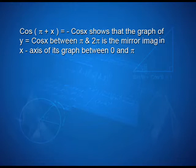To draw the graph of y = cos x in the interval pi by 2 to pi, we use the relation cos(pi − x) = −cos x. This shows that the values of cos x between pi by 2 and pi are negative, so the graph is below the x-axis in that region. The relation cos(pi + x) = −cos x shows that the graph of y = cos x between pi and 2 pi is the mirror image in the x-axis of its graph between 0 and pi.